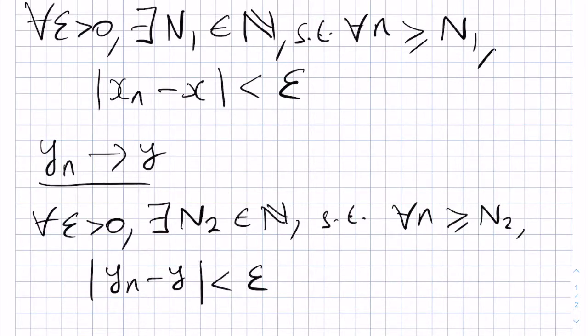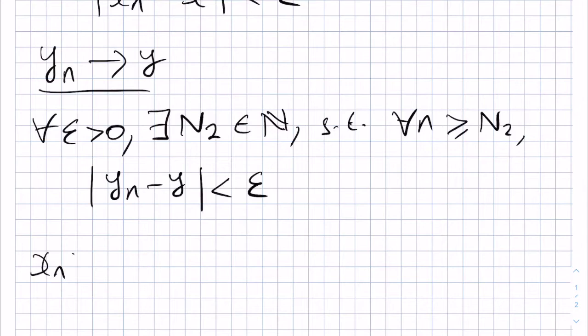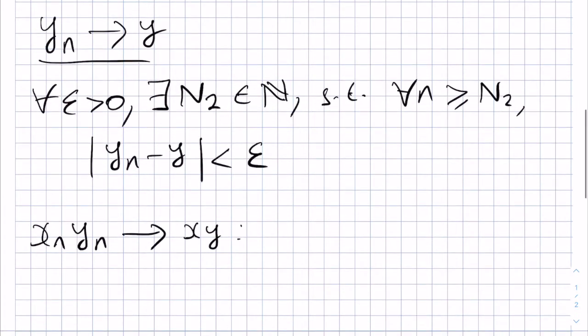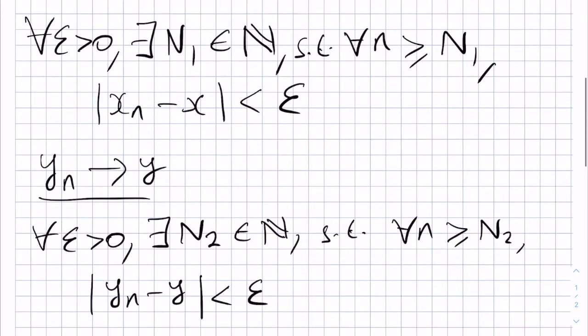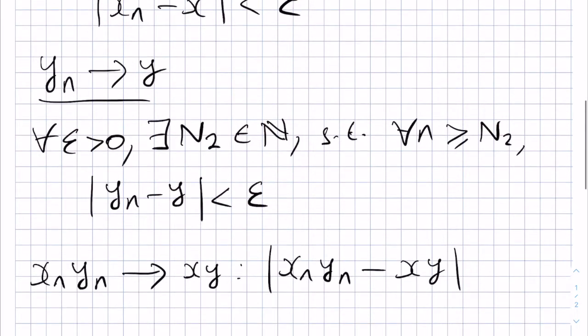Now, if we want to show that Xn Yn tends to XY, then we ought to look at the modulus of Xn Yn minus XY. Is there a way of writing this expression in order to use the earlier inequalities that we have, namely this one and this one?